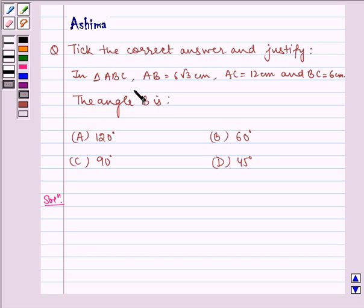In triangle ABC, AB is equal to 6√3 cm, AC is equal to 12 cm, and BC is equal to 6 cm. The angle B is: A) 120°, B) 60°, C) 90°, D) 45°.